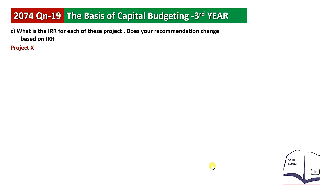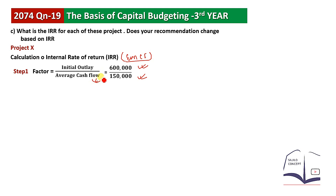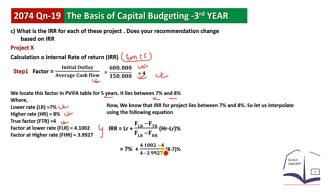Now we calculate IRR for Project X. Since cash flows are uneven, we use the average cash flow method. Initial outlay is 6,000,000. Fake factor equals initial outlay divided by average cash flow. The IRR of Project X is approximately 14.71%. We then move to Project Y.